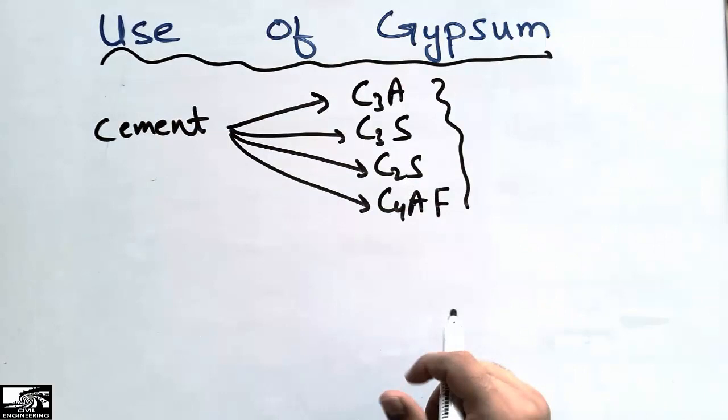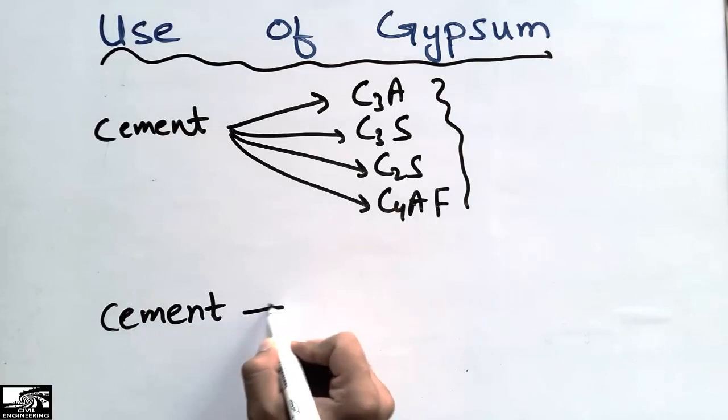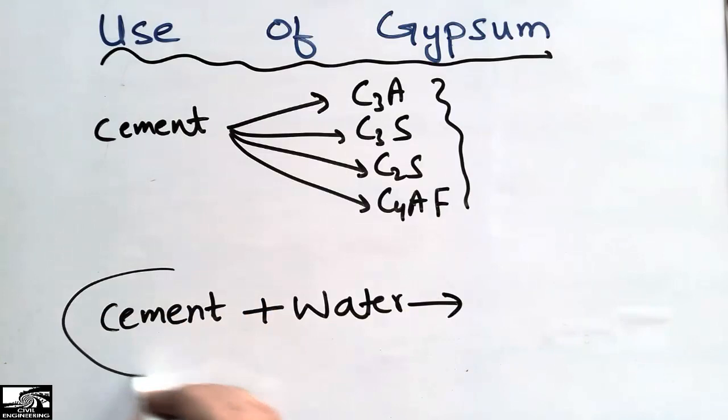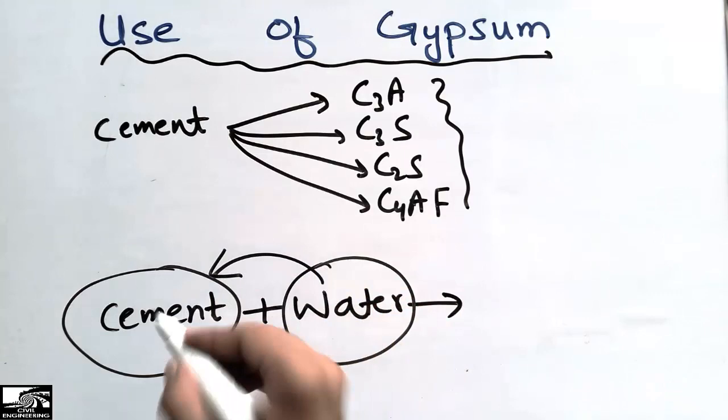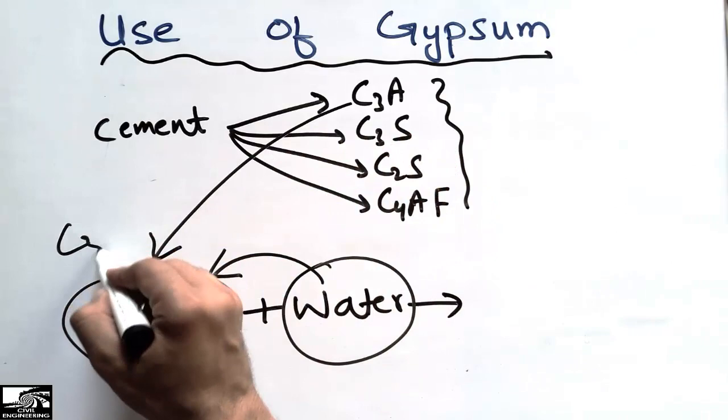Now coming to our main topic, why we use gypsum. When water is added to the cement, consider this is the cement and this is the water. When this water is added to the cement, the component of the cement which is C3A, this component C3A, not the other components, only this component tricalcium aluminate reacts with water very quickly.